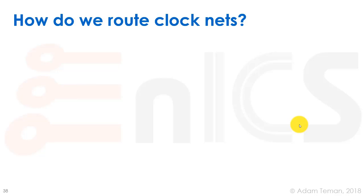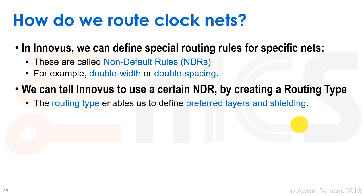So how do we do this routing of the clock trees in Cadence? In Innovus, we can define something called special routing rules, called non-default rules or NDRs. An example of a non-default rule is double width double spacing. These are sometimes provided inside the tech LEF, already defined as double-width double-spacing or triple-width triple-spacing rules, or we can define them ourselves as we'll see on the next slide.